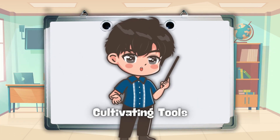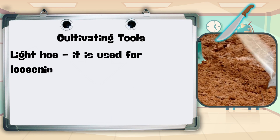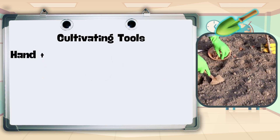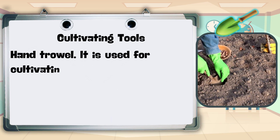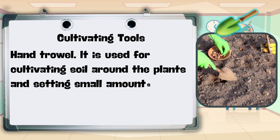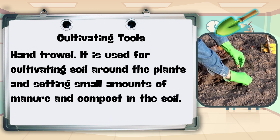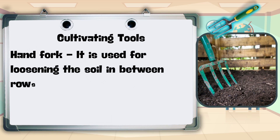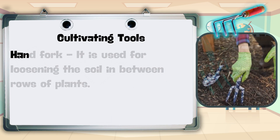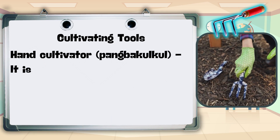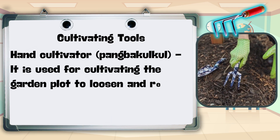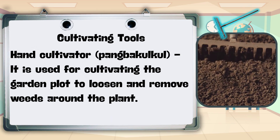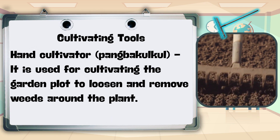For cultivating tools: light hoe — used for loosening, leveling, and digging out furrows for planting; hand trowel — used for cultivating soil around the plants and setting small amounts of manure and compost in the soil; hand fork — used for loosening the soil in between rows of plants; hand cultivator or pangbaculcule — used for cultivating the garden plot to loosen and remove weeds around the plant; rake — used for cleaning the ground and leveling the topsoil.